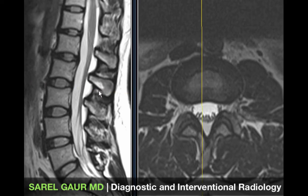In between all the spinous processes we have a thick strong ligament called the interspinous ligament, and connecting all the tips of the spinous processes is the supraspinous ligament. Next I will give a search pattern for how to go through a typical lumbar spine MRI.